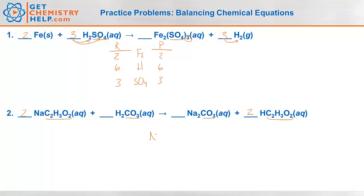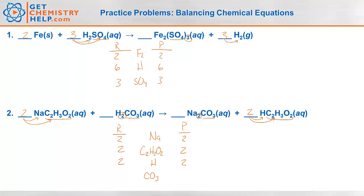Let's make a quick chart to verify: sodium, acetate, hydrogen, and carbonate. Two sodiums on the reactants, two on the products. Two acetates on the reactants, two on the products. Two hydrogens on the reactants, two on the products. One carbonate on the reactants, one on the products. Good job, that one is balanced.